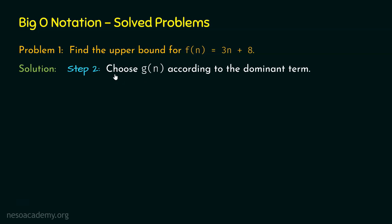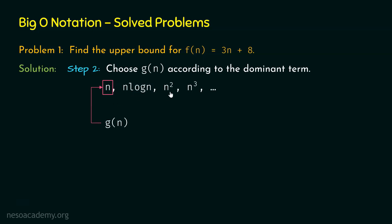Step number 2 is to choose g(n) according to the dominant term. The dominant term is 3n. We can take g(n) as n, maybe n log n, n squared, n cubed, and so on. Since n is nearest to 3n and we want the tightest upper bound, we take g(n) as n. While n log n, n squared, and n cubed can also be upper bounds, the tightest or least upper bound is n, so we choose n as g(n).